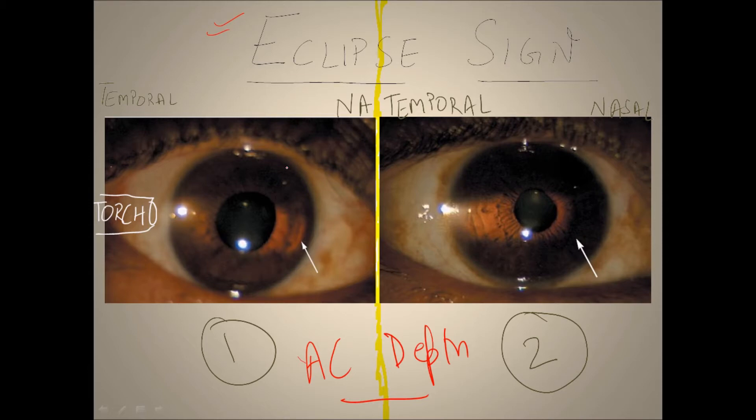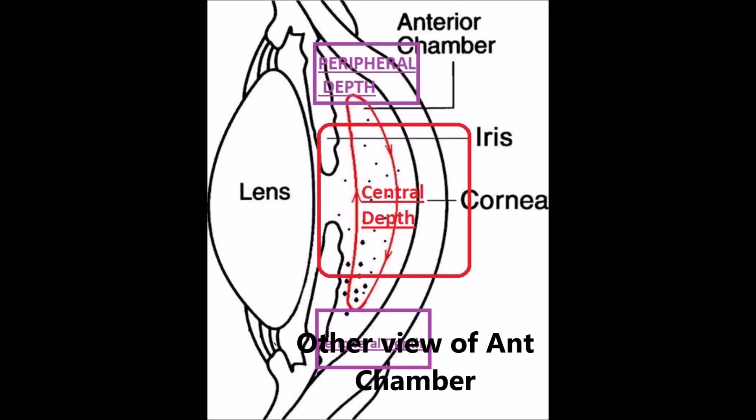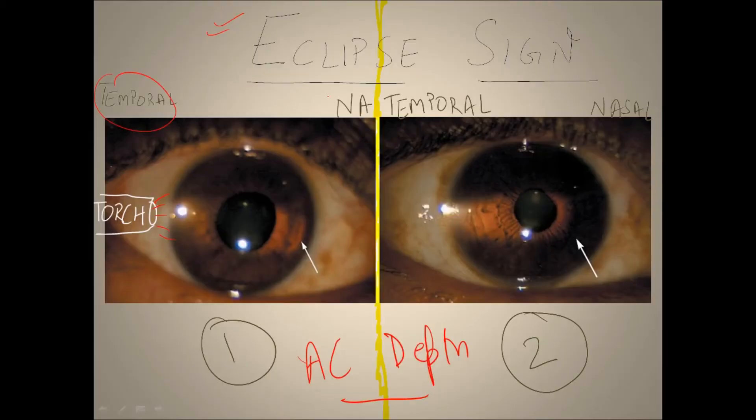This is the direction of the torch. Light is going from here, and this is the temporal side, and this is nasal. From the temporal limbus we are focusing light, and you can see in the number one picture, which shows normal depth.